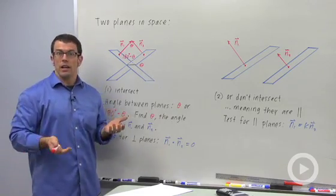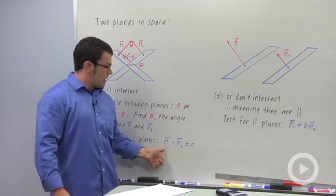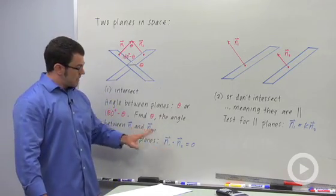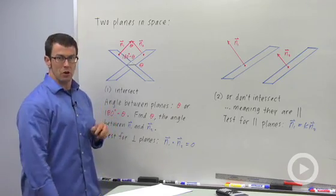How do you tell if they're perpendicular? It's really easy. You just take the two normal vectors and perform their dot product. If the dot product is zero, then the normal vectors are perpendicular, and that means the planes are also perpendicular.